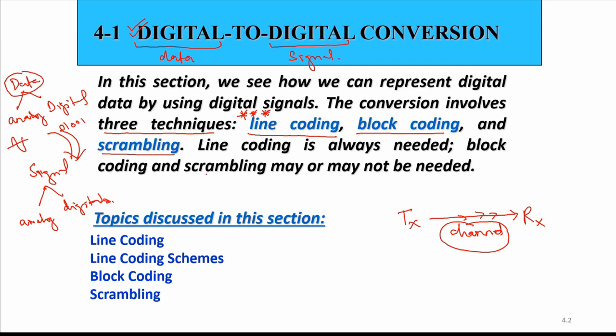Block coding and scrambling may or may not be needed, but line coding is always required. Line coding is basically going to convert the digital data into the digital signal. We will go through the different types of line coding.